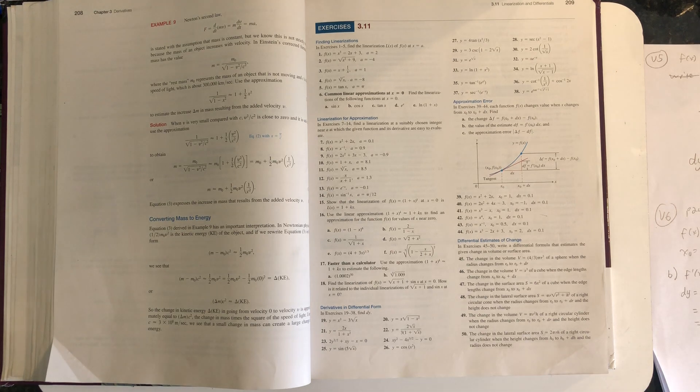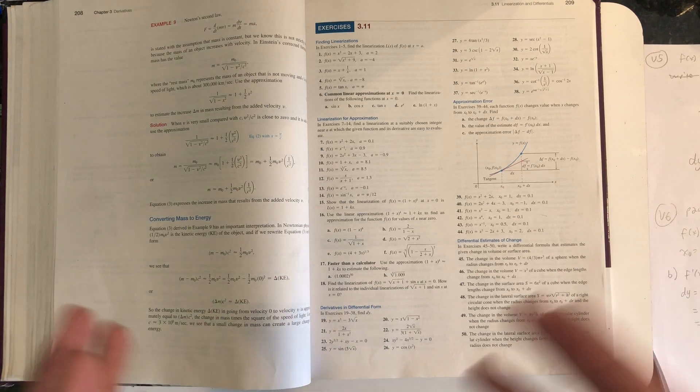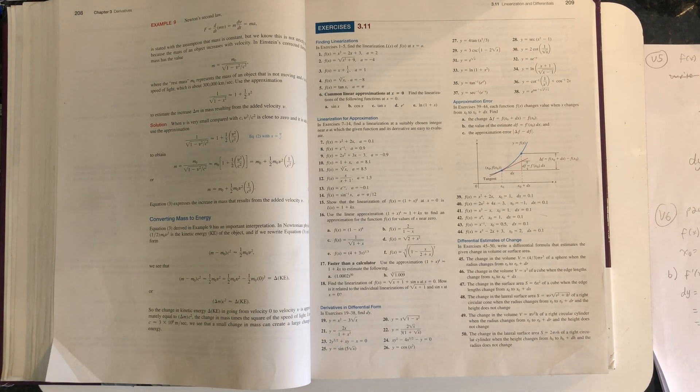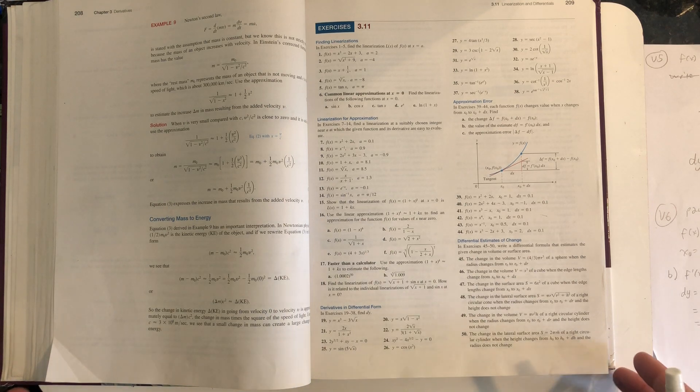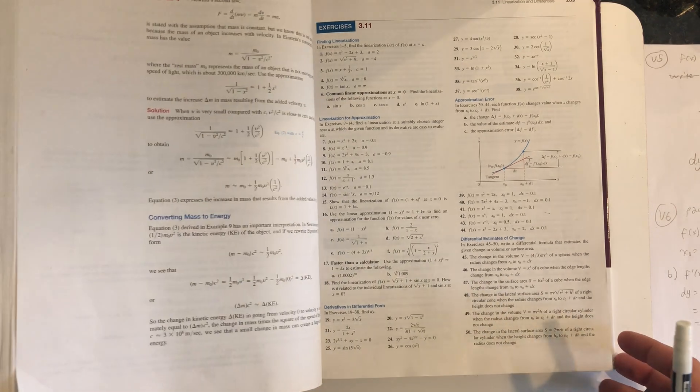In this problem we're asked to find the true change in the function Δf, the differential approximation of that change df, and then at the end we're asked to find the difference in those two values as a positive number so that we can see how good a job the differential is doing at approximating the true change in the function.